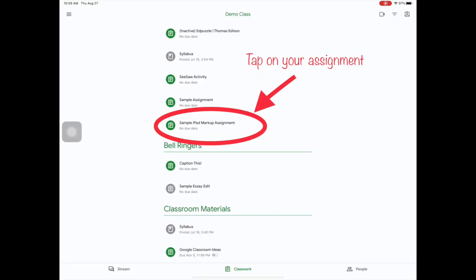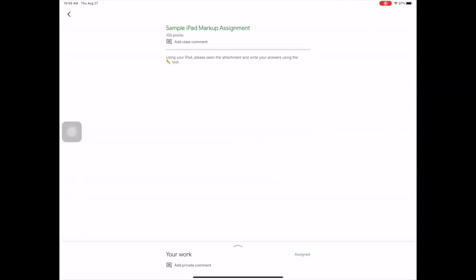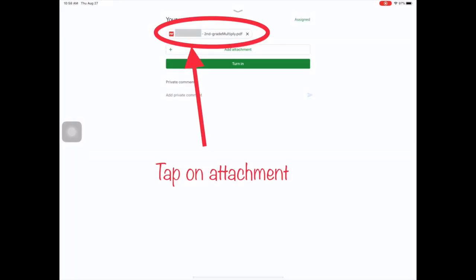When students open their assignment on their iPad, all they need to do is tap on the assignment, then tap assign at the bottom of the screen. Tap on the assignment's attachment that you want to edit.